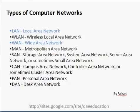SAN is a storage area network, used to connect storage devices with the server. CAN is a campus area network — a smaller combination of LANs within one campus or one building. PAN is a personal area network, used for personal use. DAN is a desk area network, a very small network within a desk.